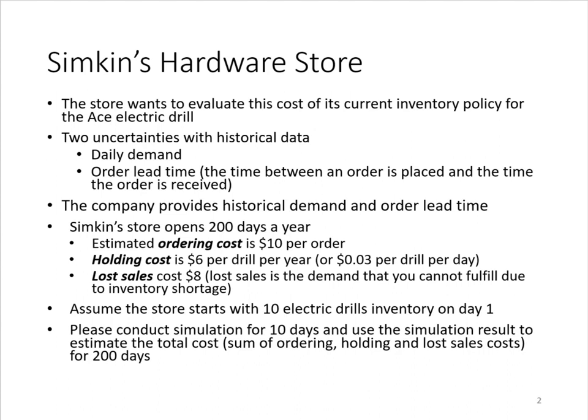There are two main uncertainties related to this product. First is the demand — the daily demand is uncertain. Second uncertainty is the lead time, which is simply the time between when an order is placed and when the order is actually received. For example, if you have Amazon Prime, when you place an order, you receive it in two days — that two days is the lead time. In this example, the lead time is uncertain, and the company provides historical demand data and lead time data to proceed.